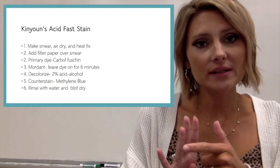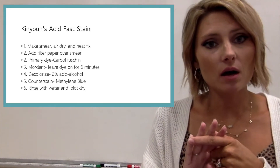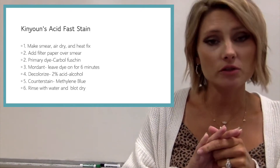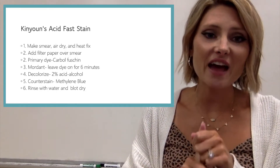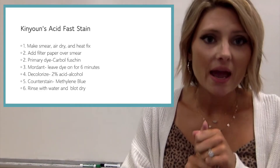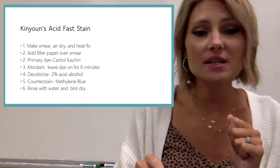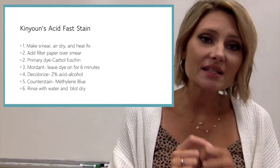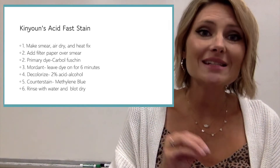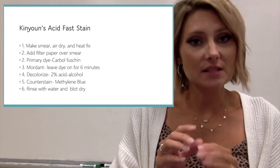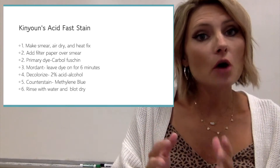The acid fast stain is a differential stain, so it has four main steps: a primary dye, a mordant, a decolorizer, and a counter stain. The primary dye in the acid fast stain is carbolfuchsin. This stain is called Kinyoun's acid fast stain because it uses Kinyoun's carbolfuchsin, which is a very strong stain — the strongest one we use in our lab.